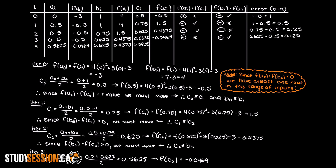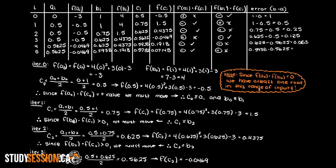I have continued this process until I have reached our desired level of error of less than 0.05. As you can see here, we have reached an error level of 0.031. This means that within this boundary of 0.031, we are guaranteed to have a root present for our function.